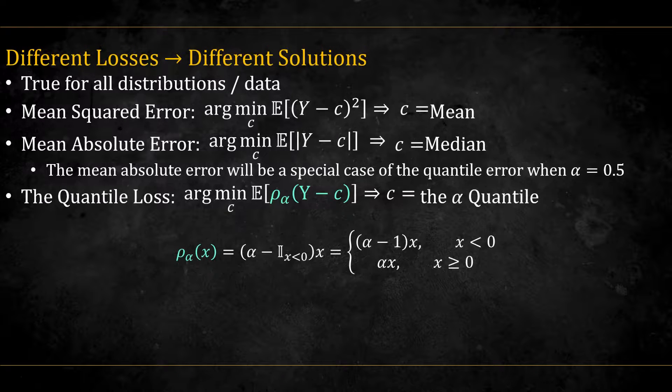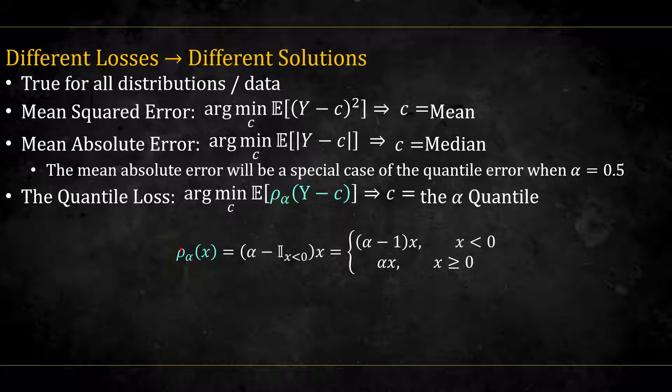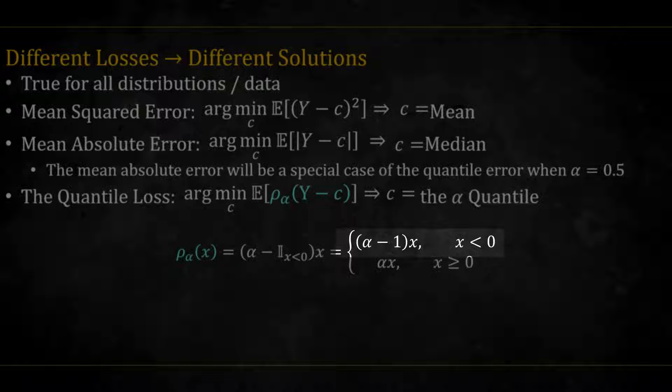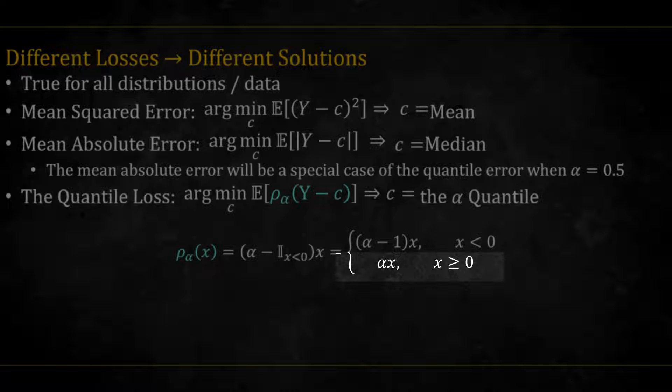Finally, the quantile loss is denoted here by the Greek letter rho, and depending on the desired quantile alpha, it is defined to be alpha minus the indicator function that the input of the function x is less than 0, times x. This boils down to (alpha - 1)x when x is less than 0, and alpha x when x is greater or equal to 0.